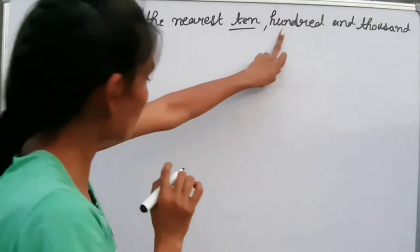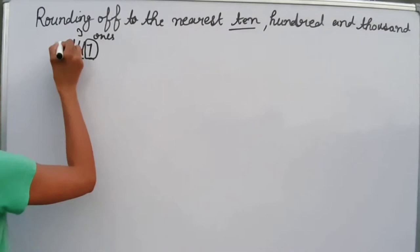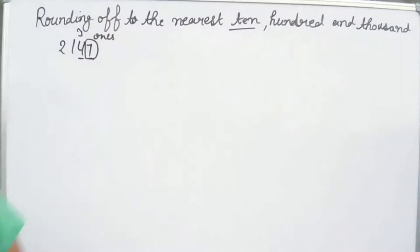If we want to round to the nearest 100, then we have to look at the tens place value. And if we want to round to the nearest 1000, then we have to look at the tens place value of the hundred.